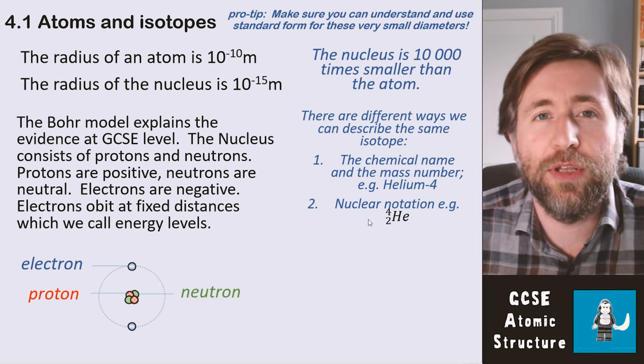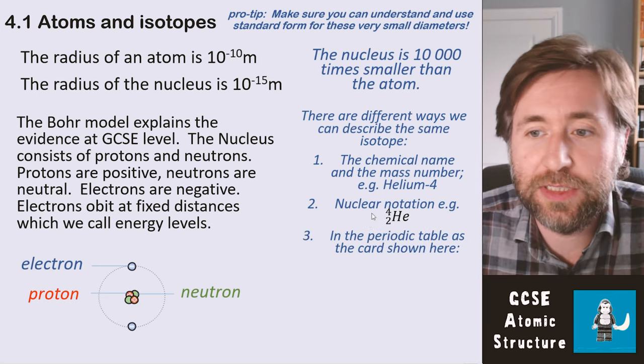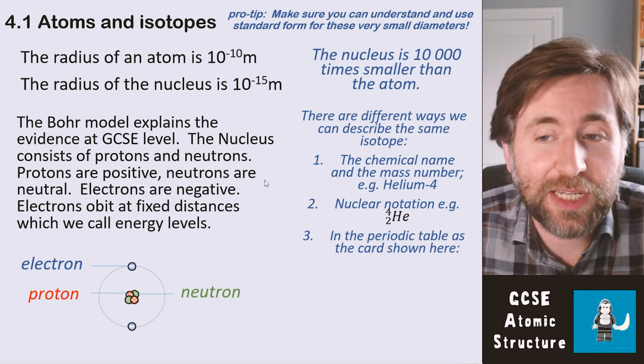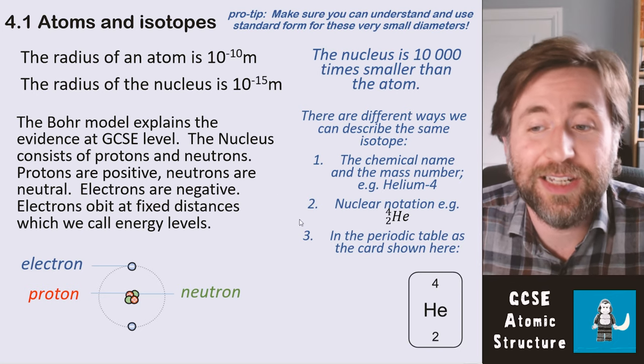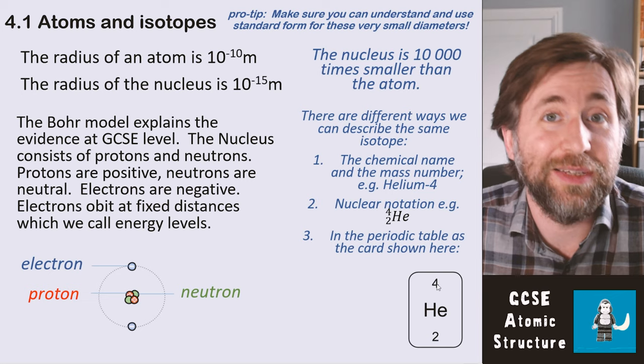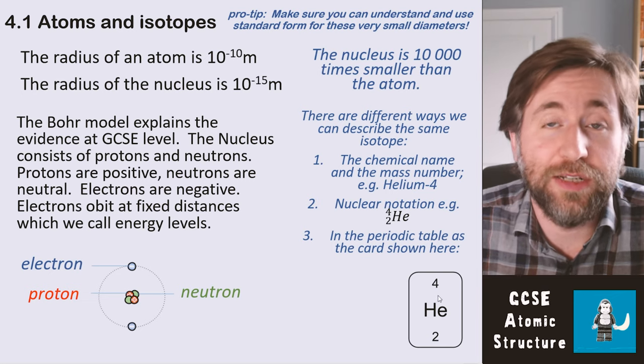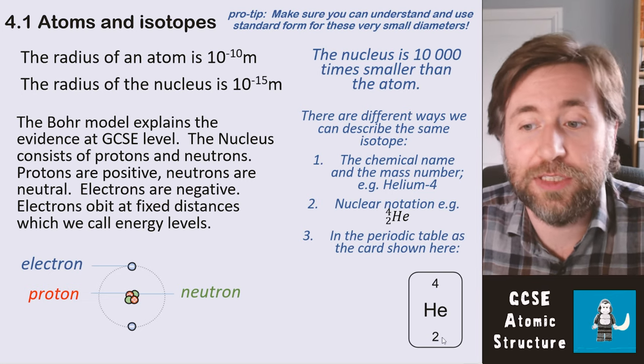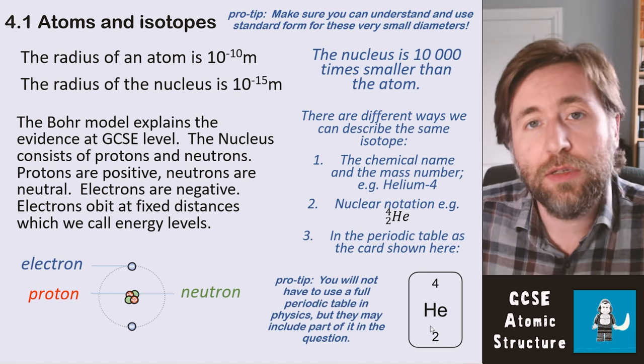Two is the proton number and four is the mass number or nucleon number—the number of particles in the nucleus. Or you could see it in the periodic table represented as a card like this. Again, the larger number will always be the mass number because that is the number of protons plus neutrons, and the smaller number is the number of protons.